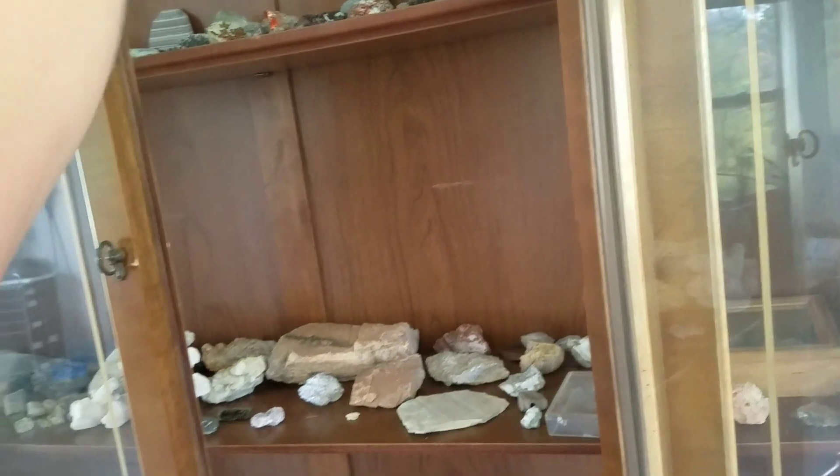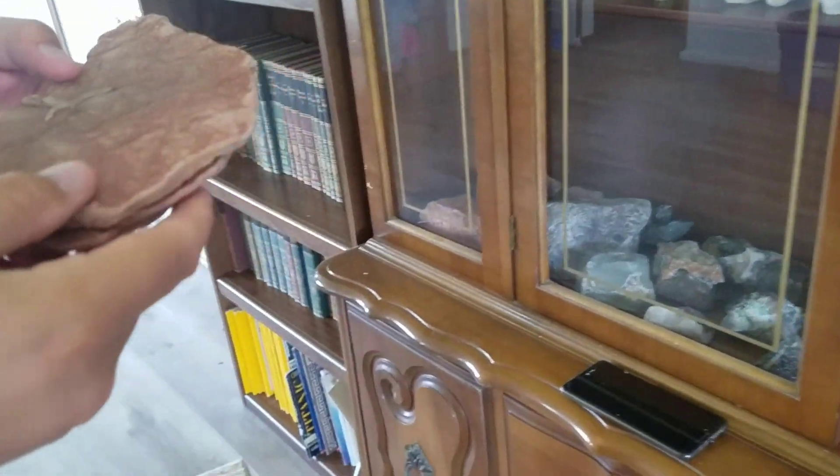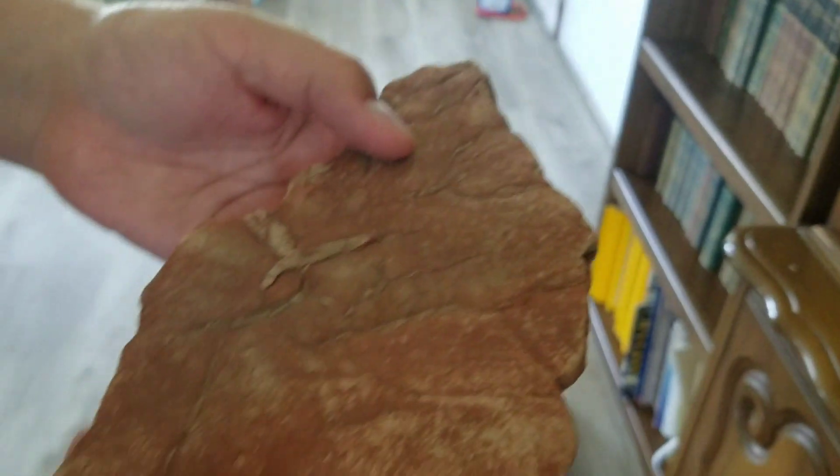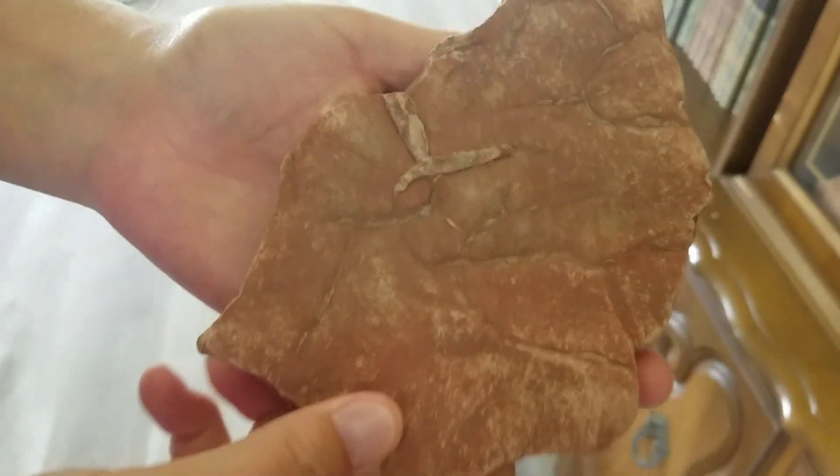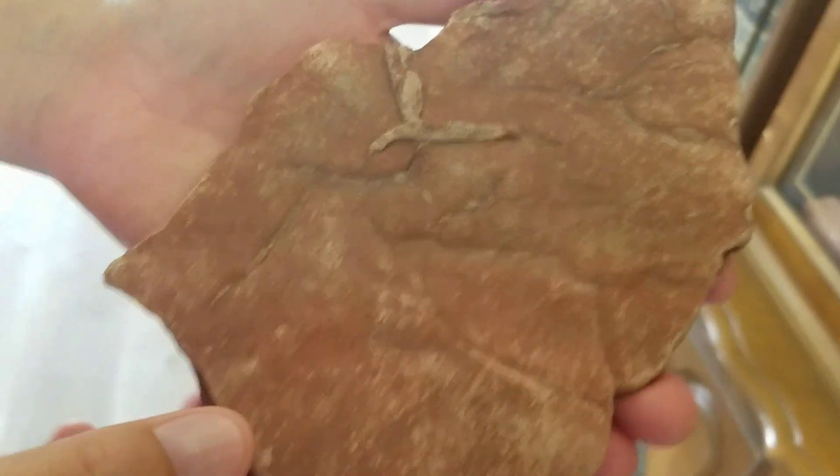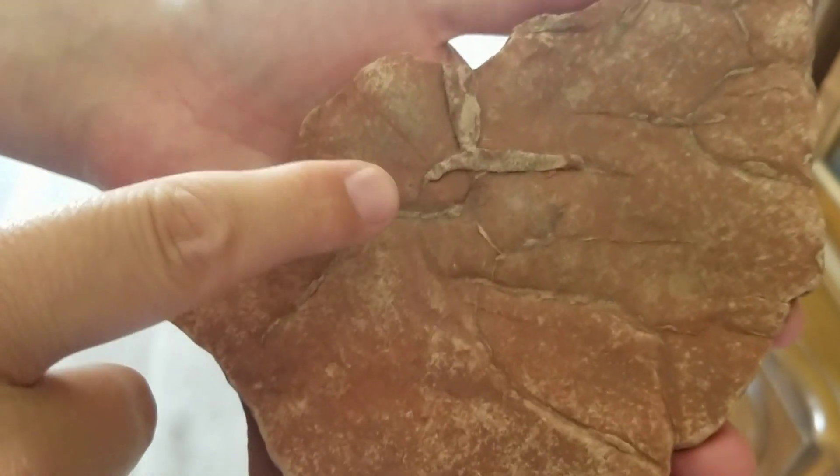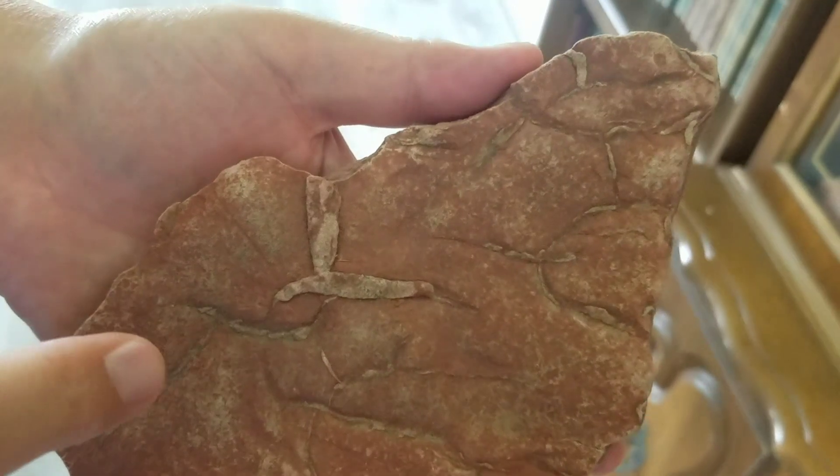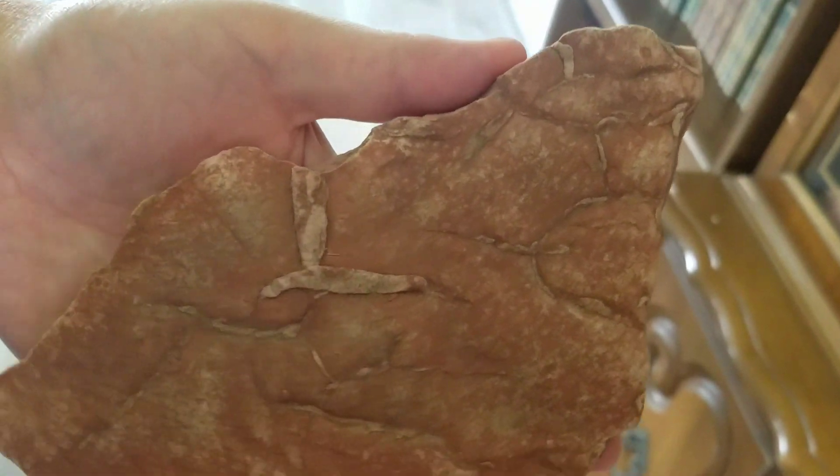Up here we have a piece of Jacobsville sandstone. This is a special piece, this is over one billion years old. Very red because it has a lot of iron content in it. And one of the reasons this rock is so special is because it still has the old mud cracks, one billion year old mud cracks still preserved in it. Pretty awesome.